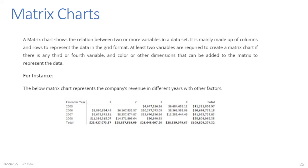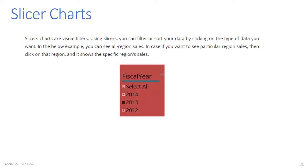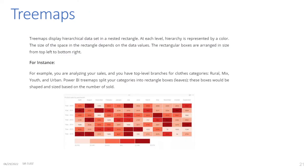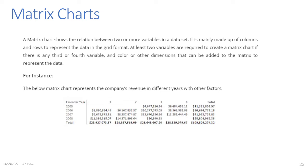Matrix Chart: A matrix chart shows the relationship between two or more variables in a data set. It is mainly made up of columns and rows to represent the data in a grid format. At least two variables are required to create a matrix chart; if there is a third or fourth variable, color or another dimension can be added to represent the data. For instance, the matrix chart shown represents a company's revenue in different years along with other factors.